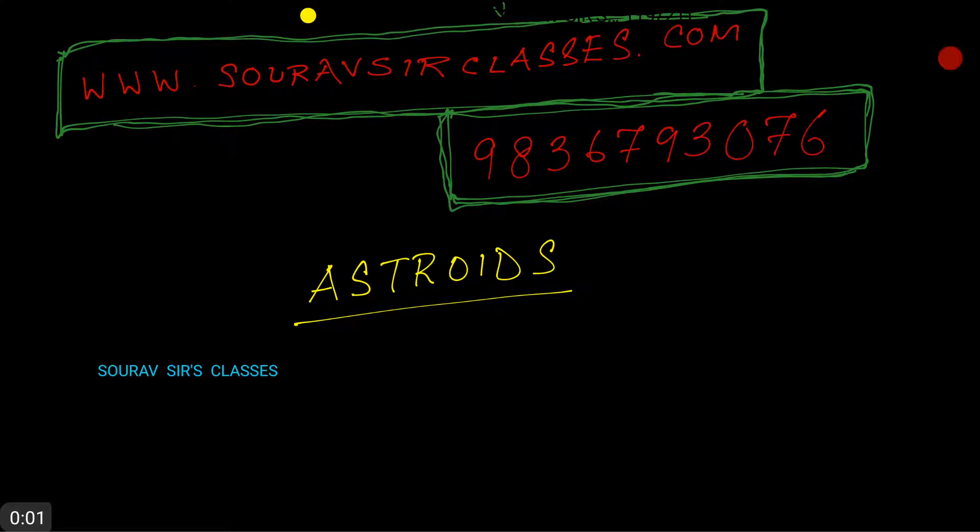Hello and welcome to Sourav Sir's Classes. In this video we'll talk about asteroids. So let us define an asteroid first. The definition of asteroids: an asteroid is - not to be confused with an asteroid.